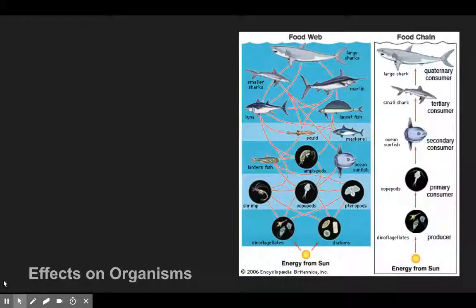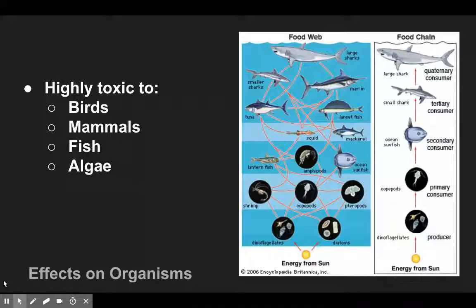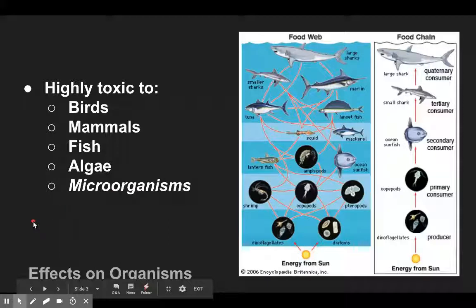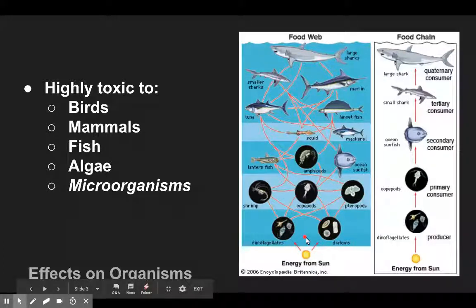Before we go into sources, let's look at how these affect organisms. Unfortunately, oil is highly toxic essentially to all living things, even microorganisms. We italicize microorganisms because to the right you have a marine food chain and even a marine food web, and notice the base of the marine food web are microorganisms. So when you have an oil spill and the base of the food web is affected, it trickles all the way up to higher trophic levels.